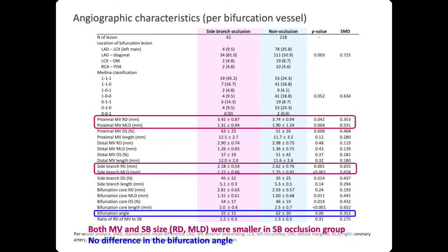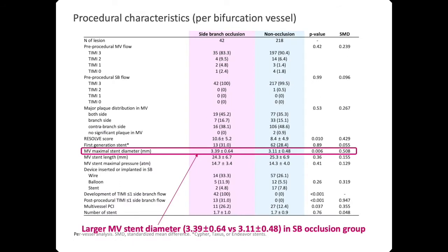In per-bifurcation vessel analysis regarding angiographic characteristics, the reference diameter and minimal luminal diameter of both main and side branch were smaller in the occlusion group compared to the non-occlusion group, but there was no difference in bifurcation angle between the two groups. The main branch stent diameter was slightly larger in the side-branch occlusion group.